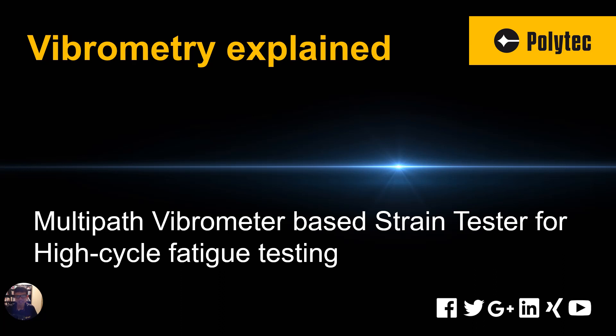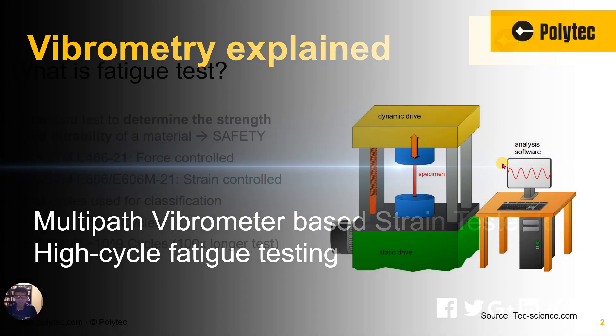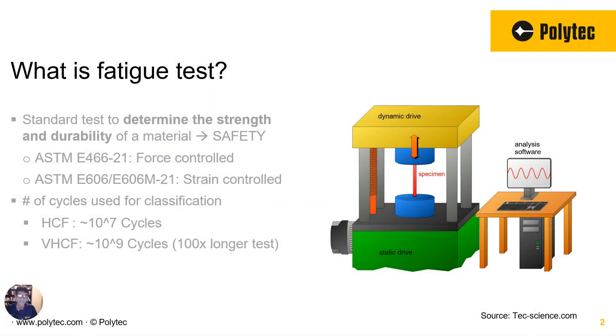In this case we are talking about a strain tester specifically designed for high cycle fatigue testing or very high cycle fatigue testing. But let's start with the definition of fatigue test. In a fatigue test the material under test goes through a cyclic loading where we fix the frequency and then depending on which ASTM standard you're following you may be controlling to keep the force constant or you may be controlling to keep the strain constant.